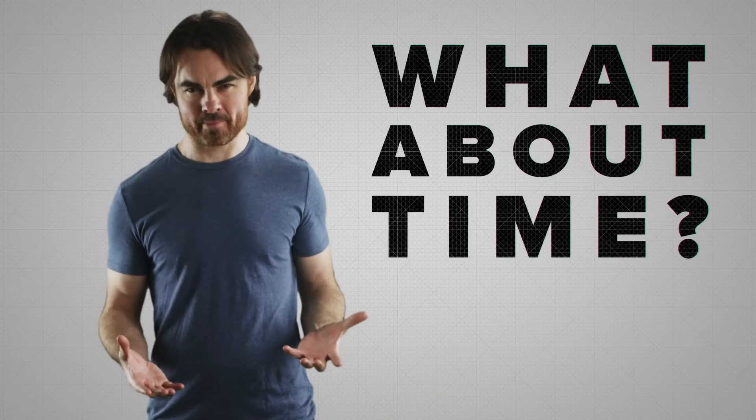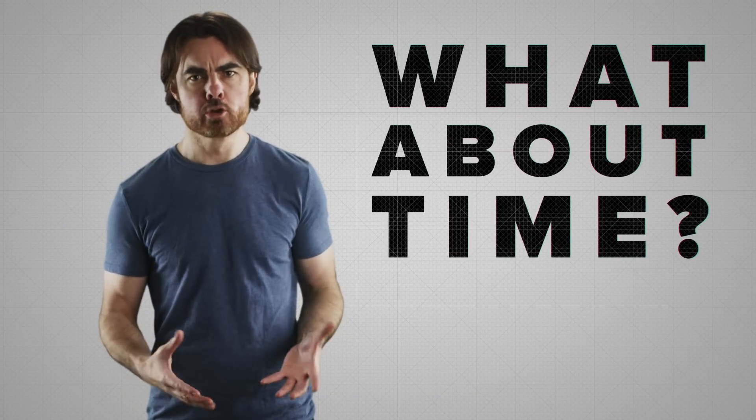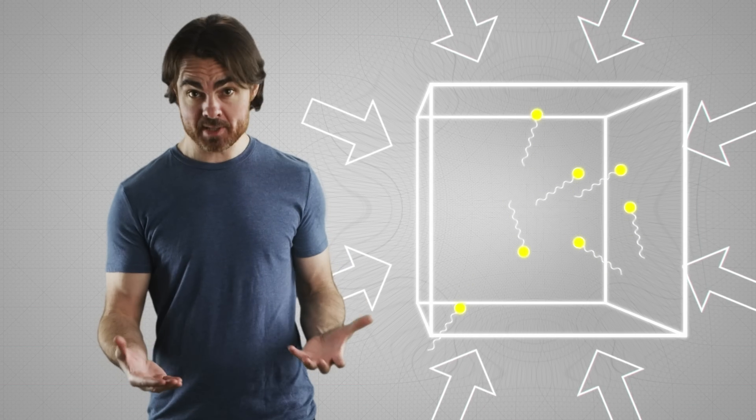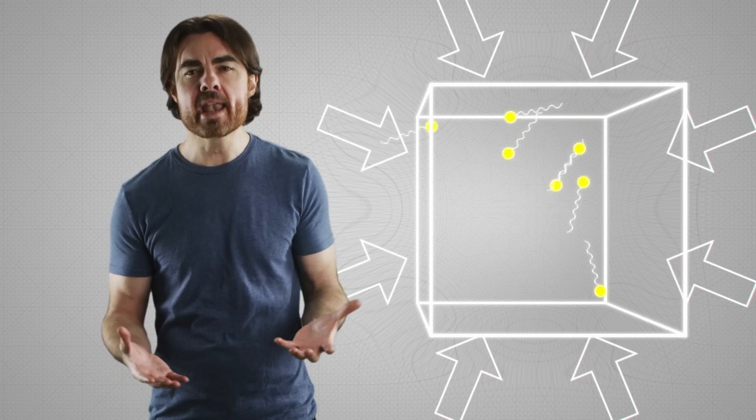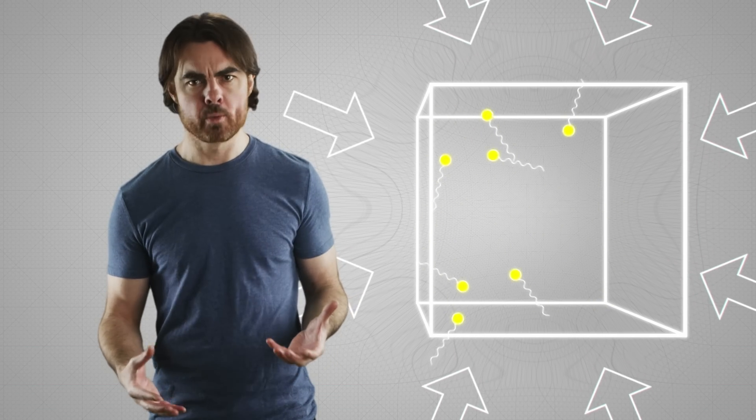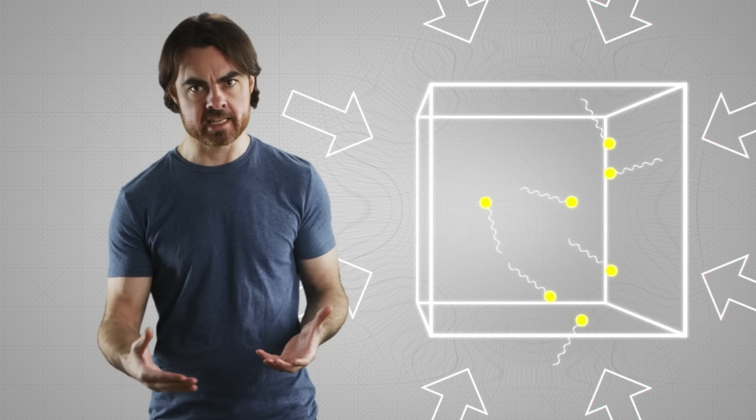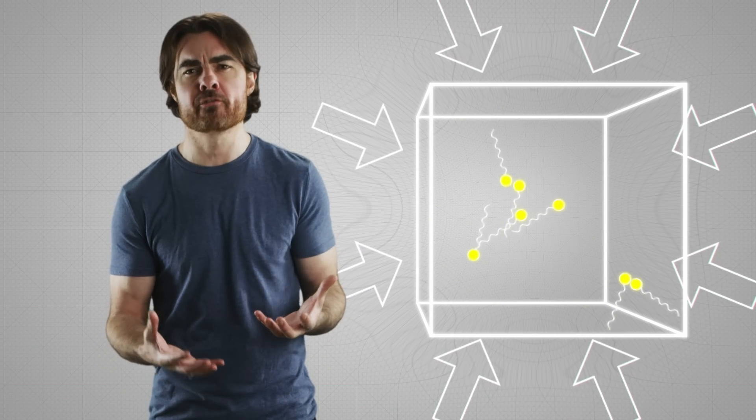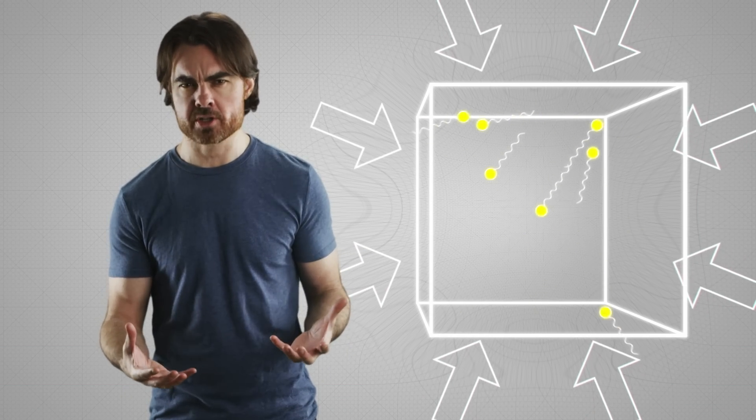What about time? A single photon experiences no time, nor does any massless particle. Their clocks are frozen. But our photon box has mass, so it must experience time. When and where does this time arise? The individual photons don't have it when they travel from one side of the box to the other. Do they get time when they bounce off the wall? Does the ensemble of photons somehow feel time that individual photons do not? We'll explore these questions when we delve deeper into the mystery of matter and time in the next episode of Space Time.